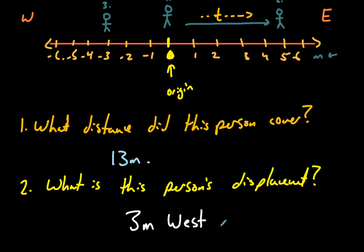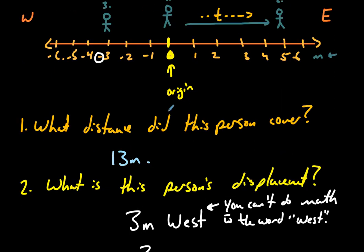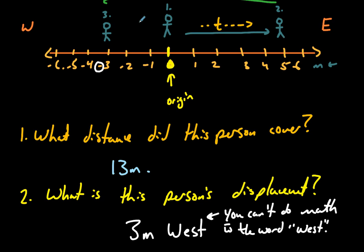However, that being said, using the term west, you can't do math with the word west. However, you can do math with negative numbers. So another way to say this is actually just to say the displacement is negative three meters. Either of these is okay, but if you want to do math with it, you have to leave it like this. So this is saying to the person observing that the person is out of place by three meters. And that three meters is to the negative.